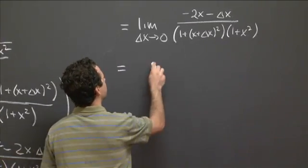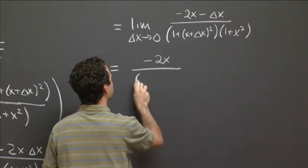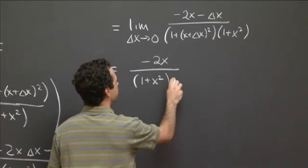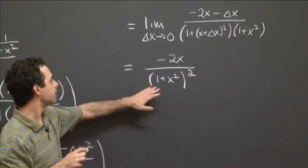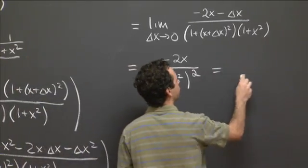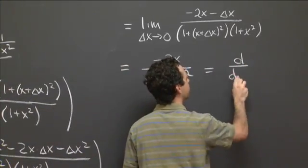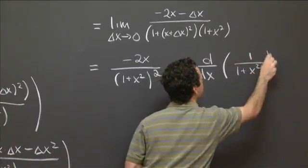So this just works out to minus 2x over (1 + x²)². And so this is the derivative that we were looking for. This is d/dx of 1 over the quantity (1 + x²).